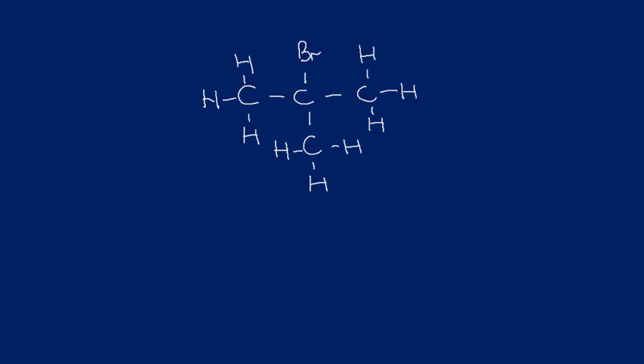Starting with the first example, we recognise it as a haloalkane: it only contains carbon-carbon single bonds and there's a halogen — bromine — on the chain. We look for the longest possible chain, which is three carbons. There's a three-carbon chain either way, giving the same name. Numbering one, two, three — and in reverse one, two, three — it's propane.